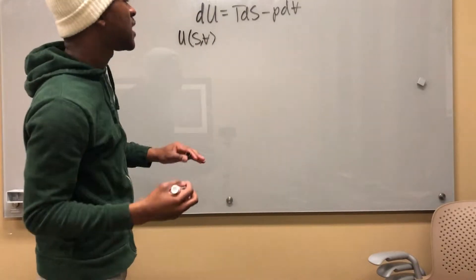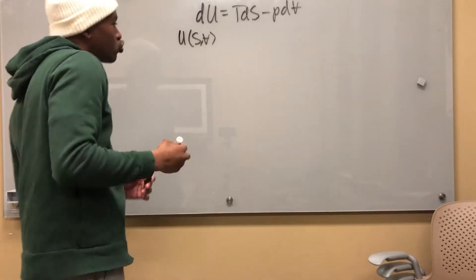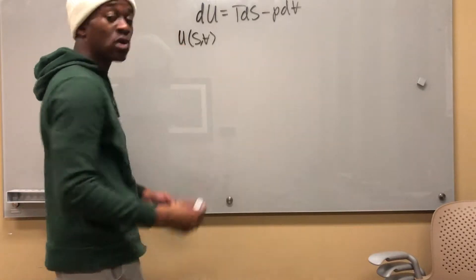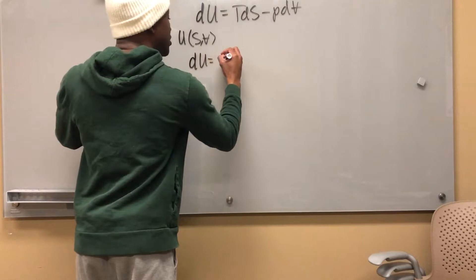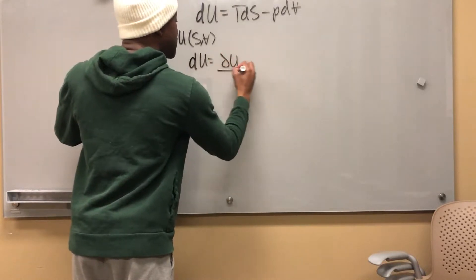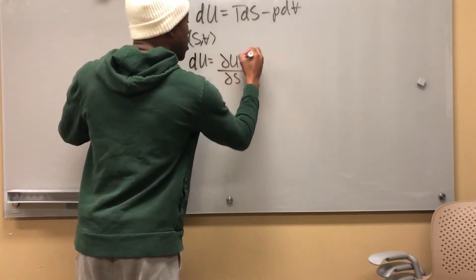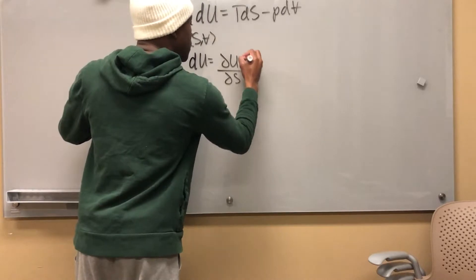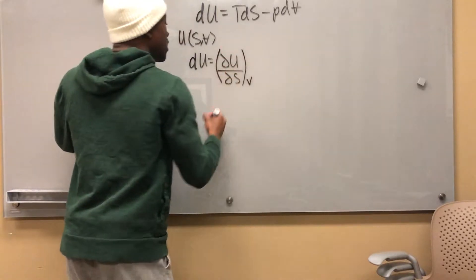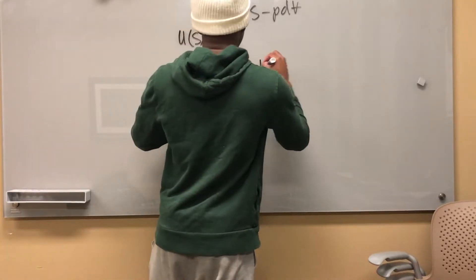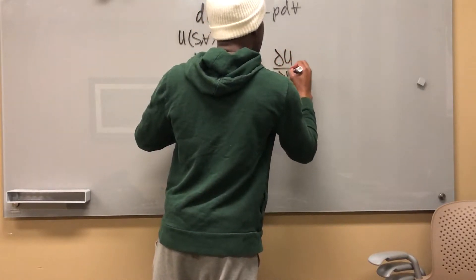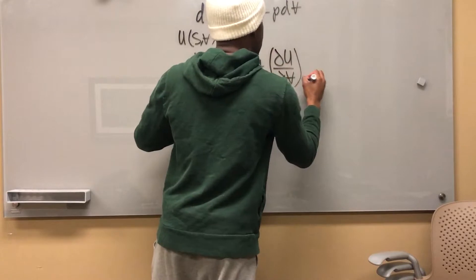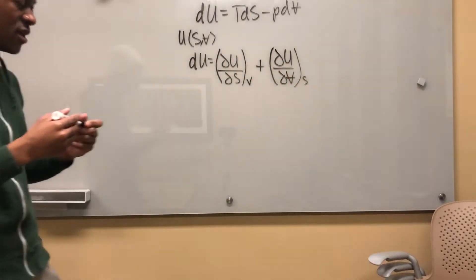I can say that du, the total derivative of u, is equal to del u del s at constant v, plus del u del v at constant s.